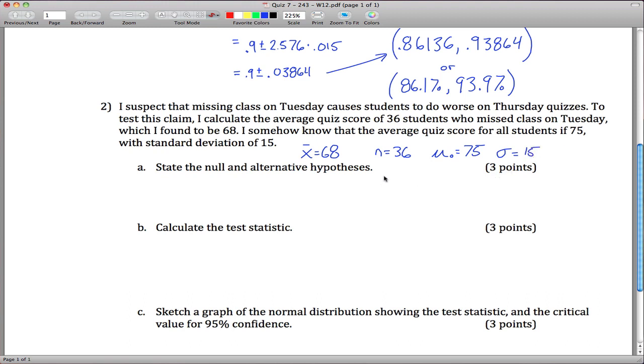So what's going on here is that all students average score is 75, and I suspect that missing class causes people to do worse on quizzes. So my claim, my alternative hypothesis H1 or HA, is that mu is less than 75.